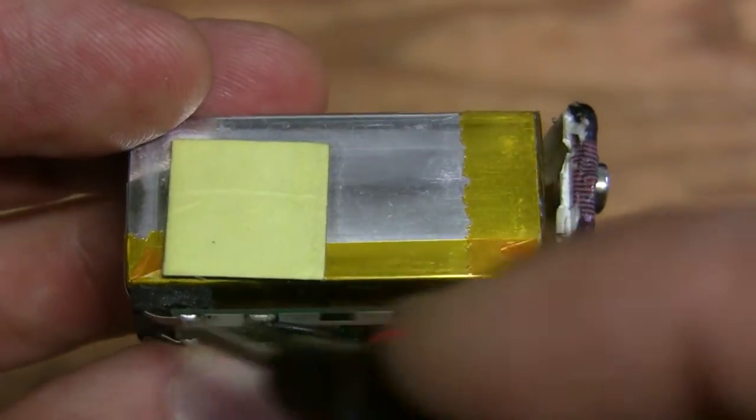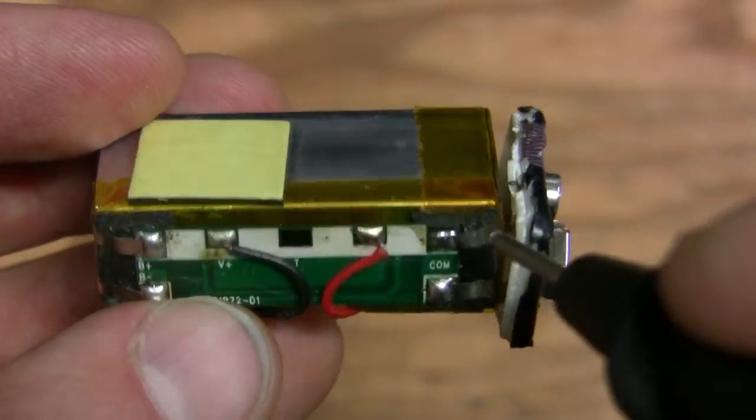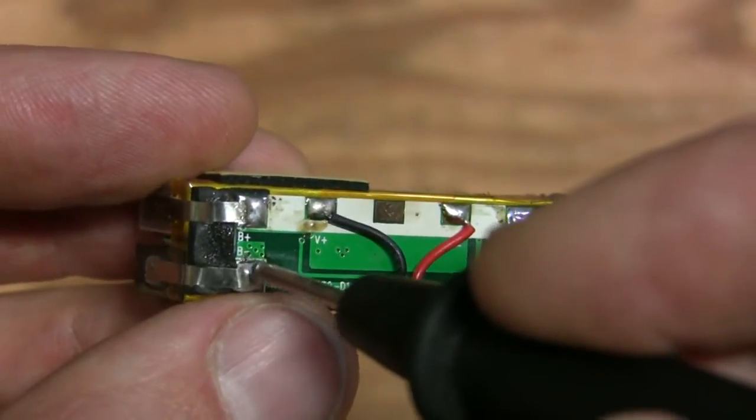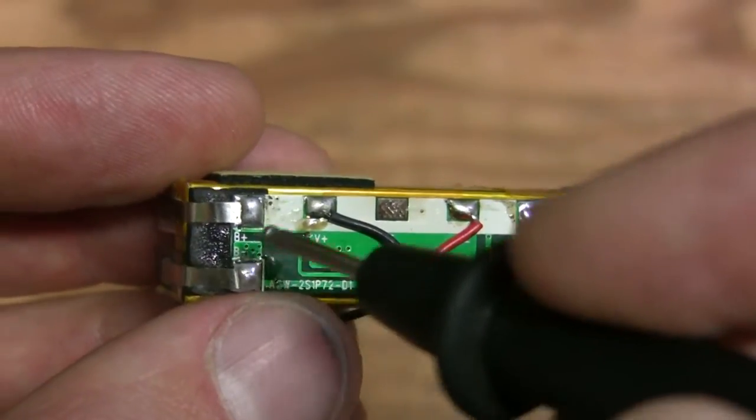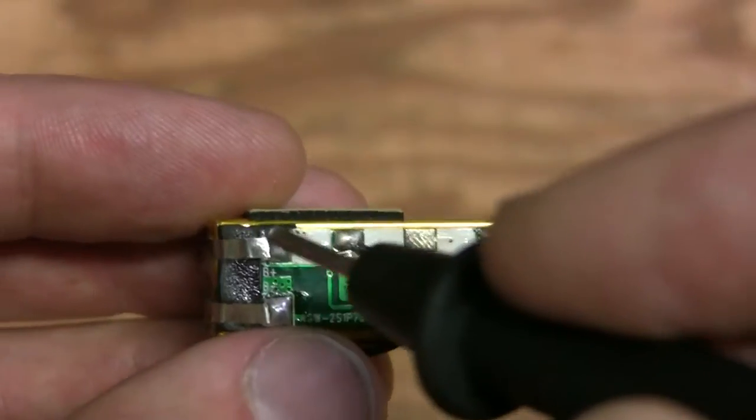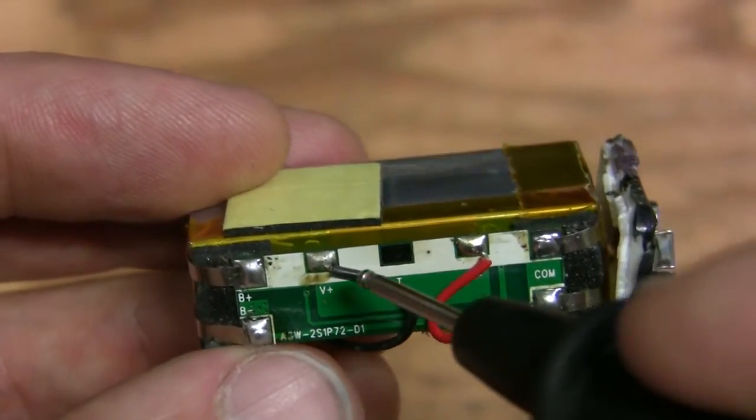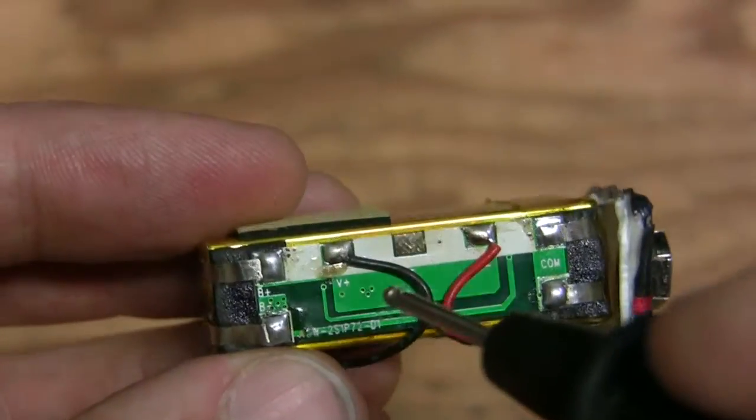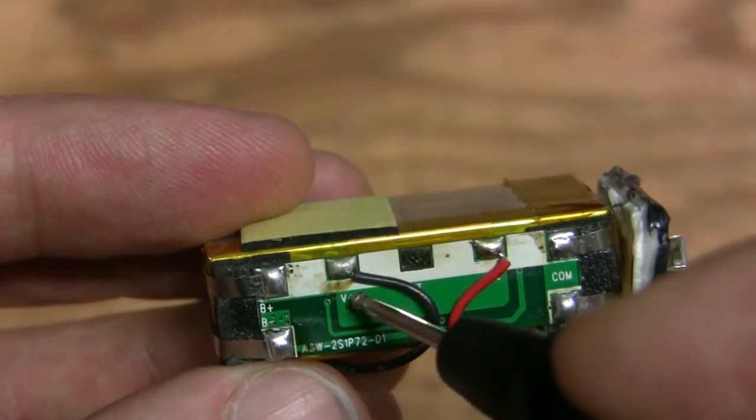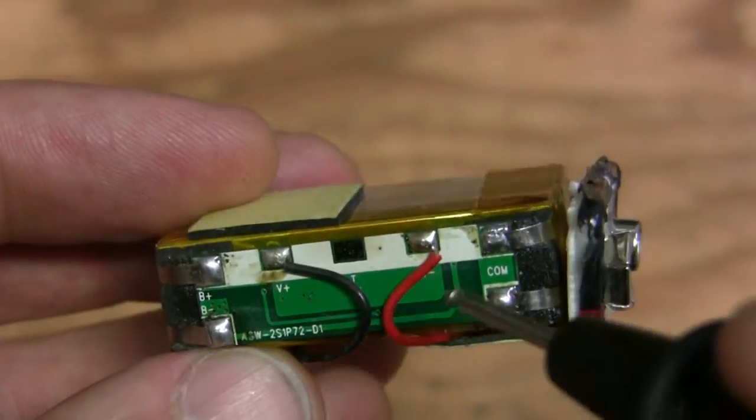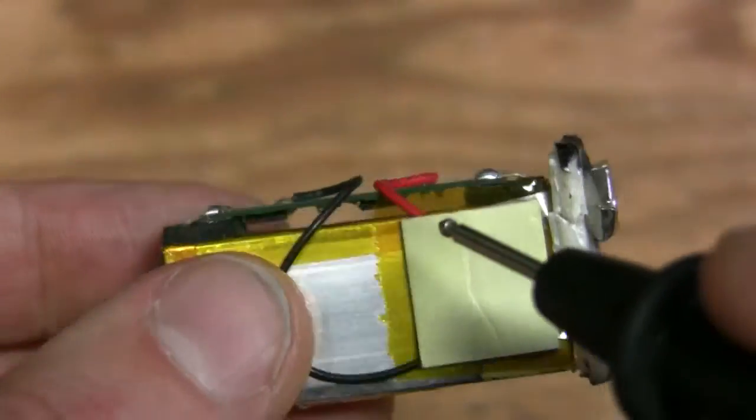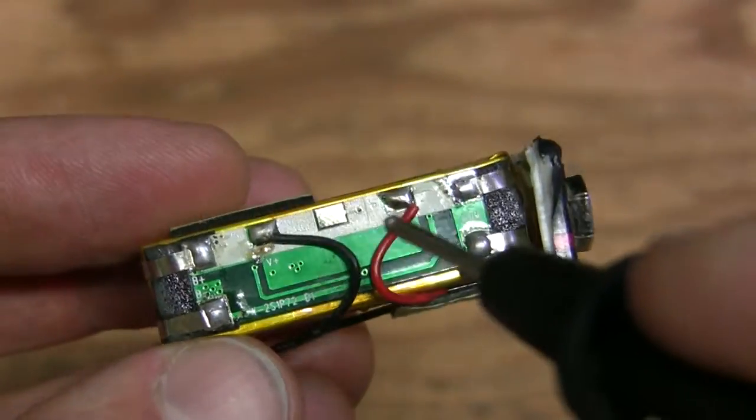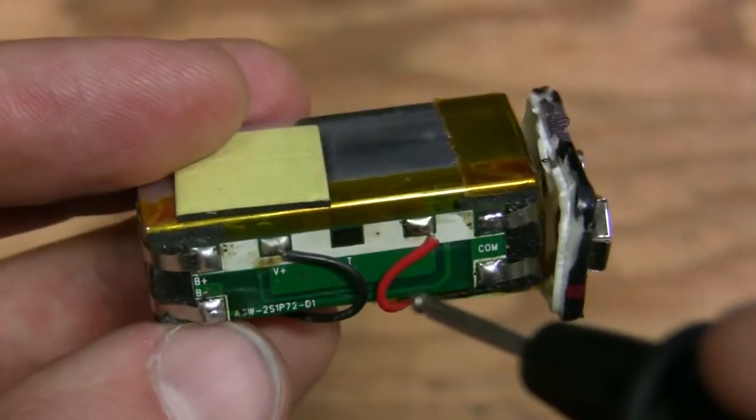These are the terminals from the cells. As we can see, these two are connected together. This is the negative from one cell and this is positive from the other cell. These two wires are the output. This one is positive, which is black for some reason, and negative is red, which is very unusual. I would expect the opposite. We need to keep this in mind.